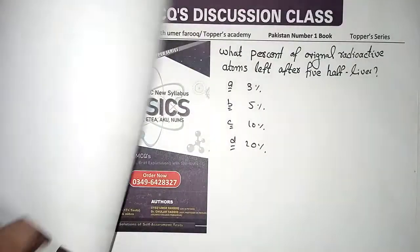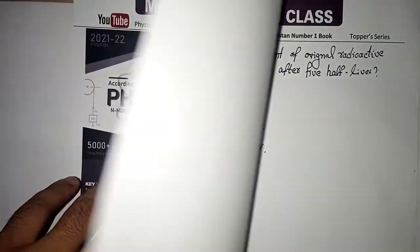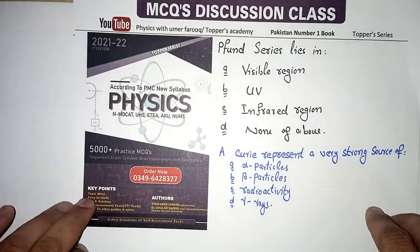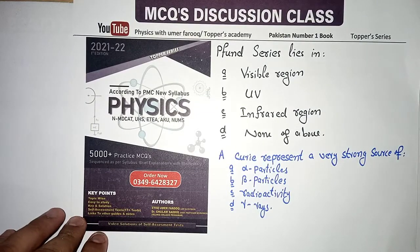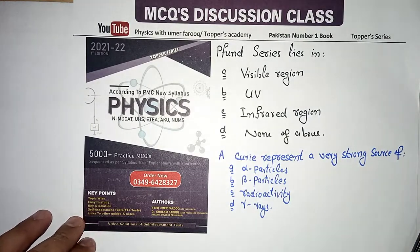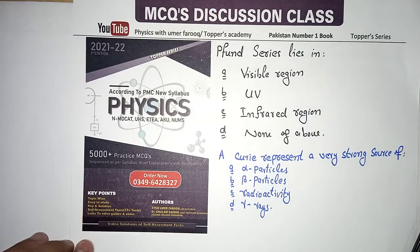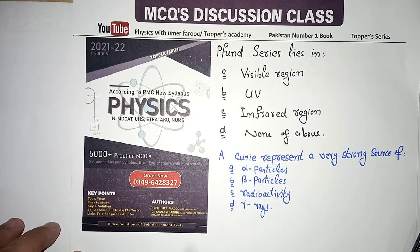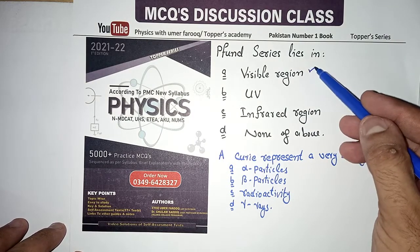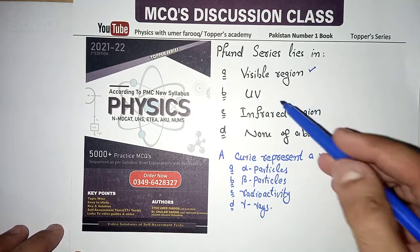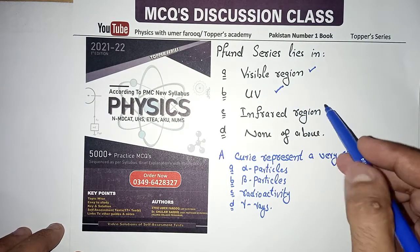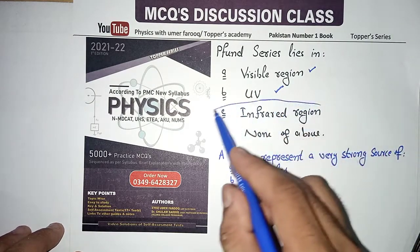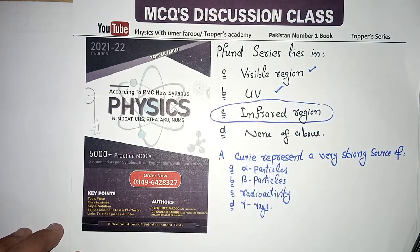What is the Pfund series? Does it lie in the invisible region, ultraviolet region, infrared region, or none of the above? Visible region is Balmer series, ultraviolet is Lyman series. So the correct option for the Pfund series is infrared region.